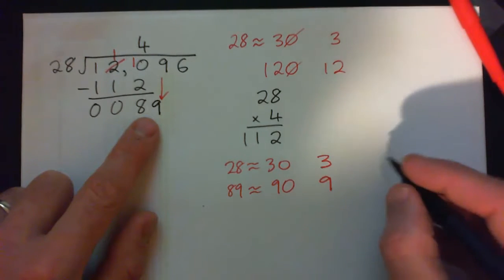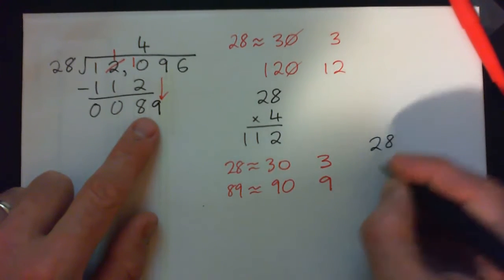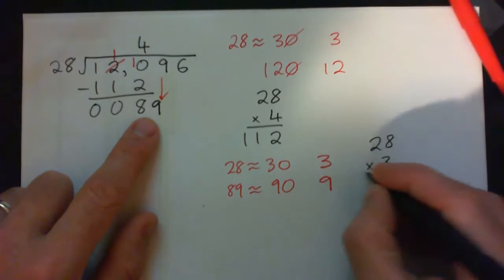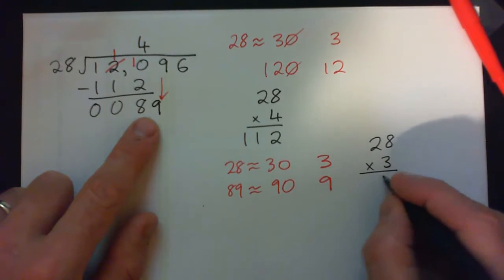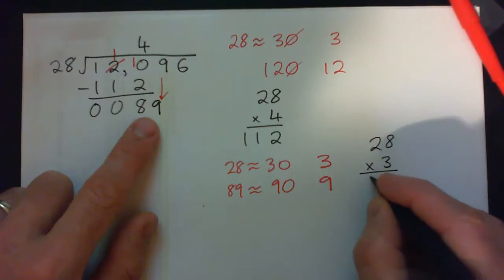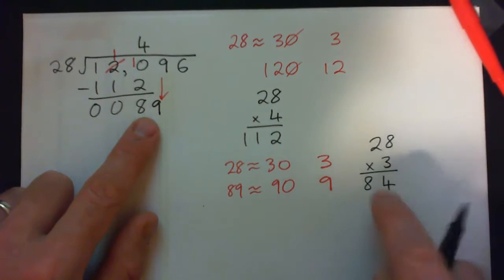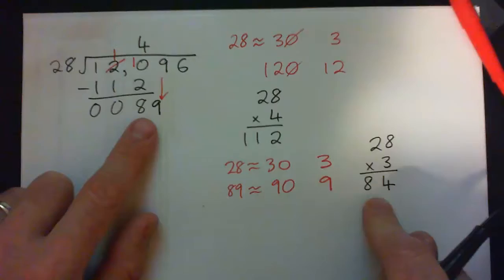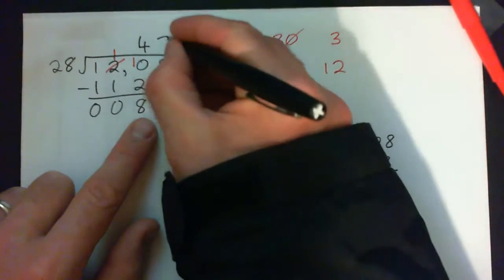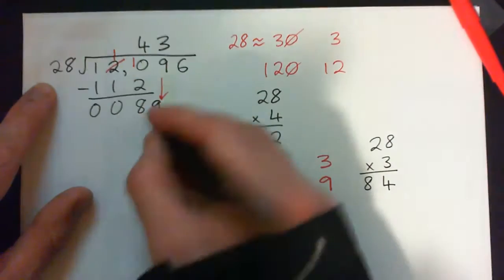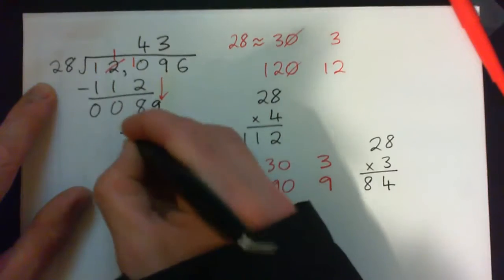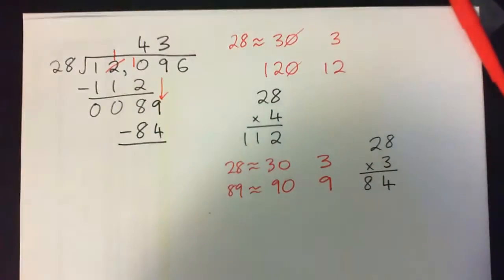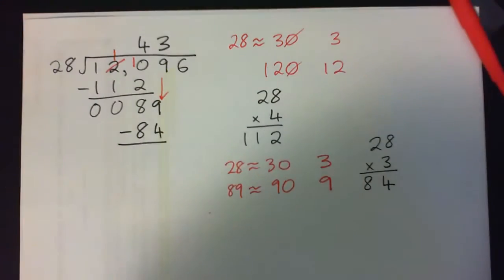Let's try 28 times 3. 3 times 8 is 24, carry the 2. 3 times 2 is 6, and 2 is 8, 84. That's just a little less than 89, so that's just right. 3 times 28 is 84. 89 subtract 84 is 5.